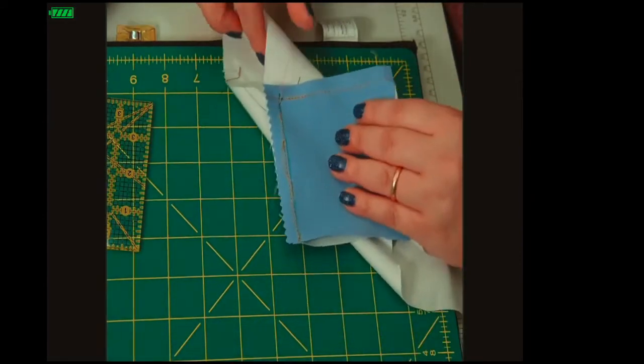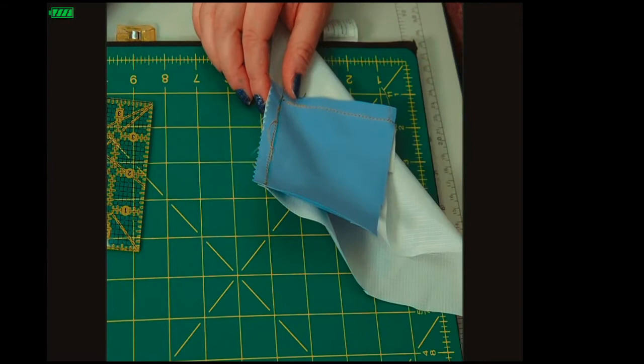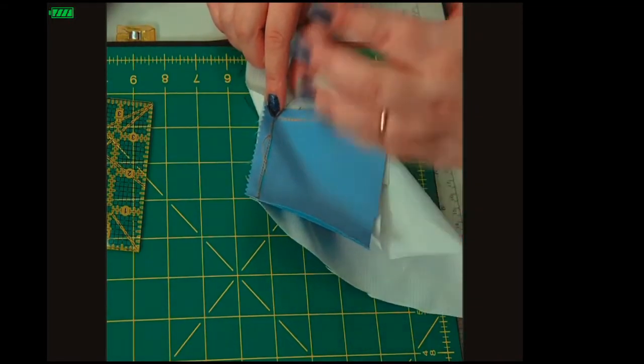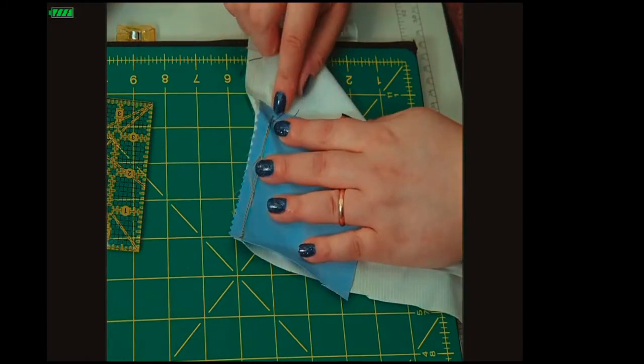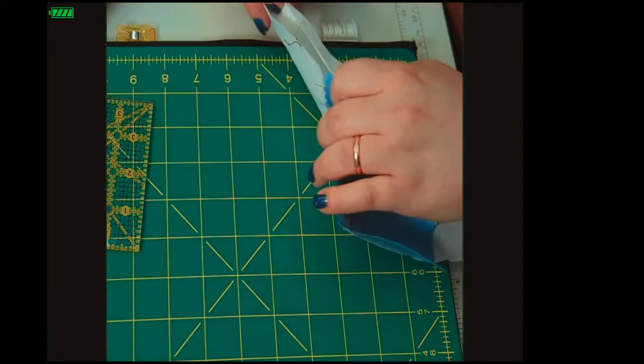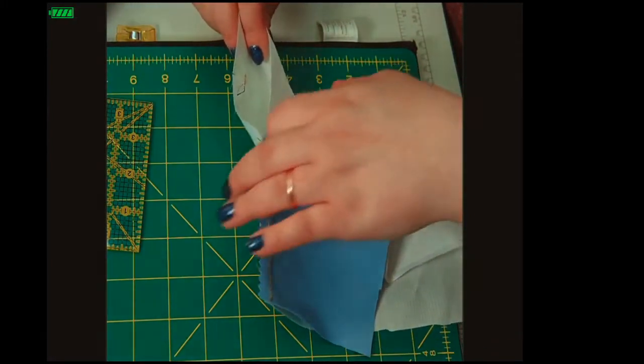So you just finished your three-eighths of an inch all the way around, except you're sewing and you did three inches on all four sides and stopping three-eighths of an inch at each end.